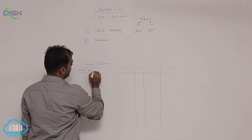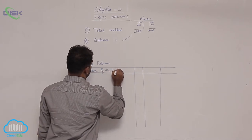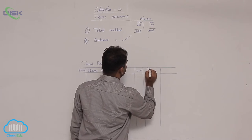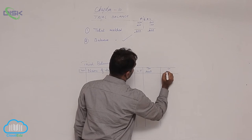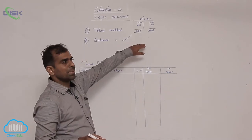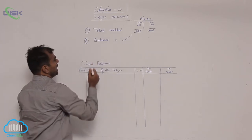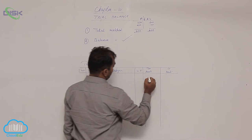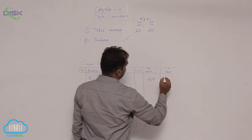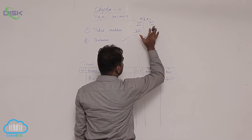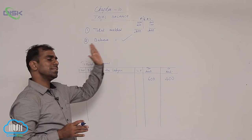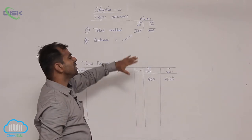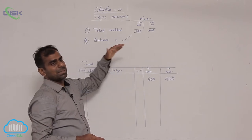Here we write name of the ledger. This is LF. Then here debit amount, credit amount. Suppose if we are following the total method, what I need to mention is, in the name of the ledger, I will mention A's account. If you see here on debit side, the total is 600, I write 600 here. On credit side, it is 400. That means I am not balancing my ledgers. Just whatever is the total on the debit side, I am bringing it here. Whatever is total on the credit side, I am bringing it here. So this method is not very popular in practical usage.